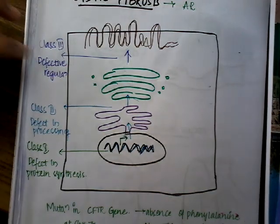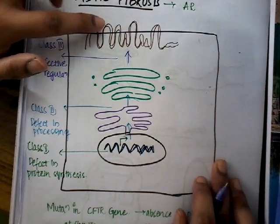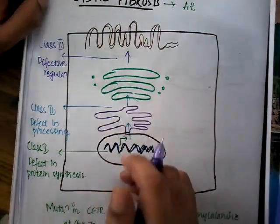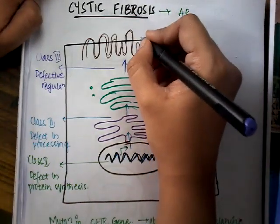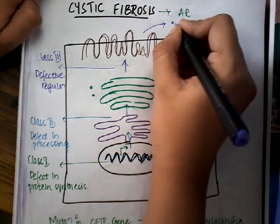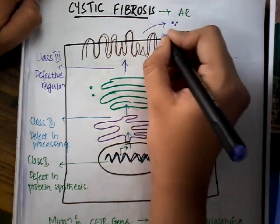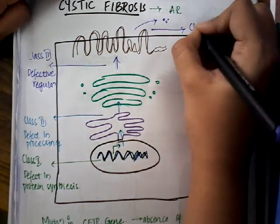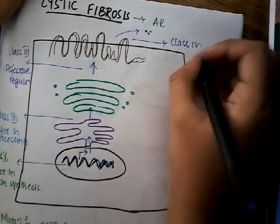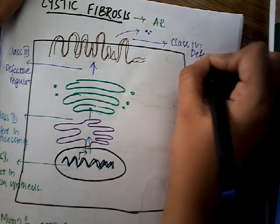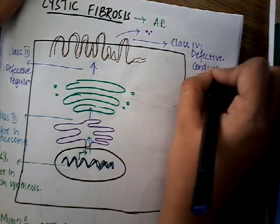The regulated protein has reached the outer receptor but is not able to come out of the cell. For it to function, this conduction process must occur, but it is not happening. This is called Class 4, which is defective conduction — the conduction of the protein out of the cell cannot occur.